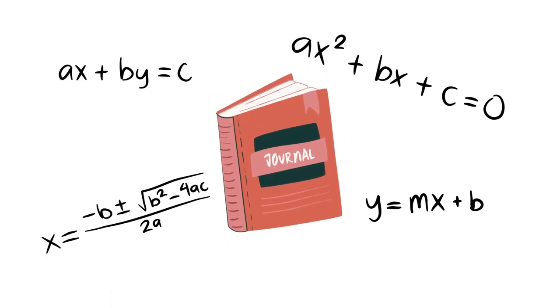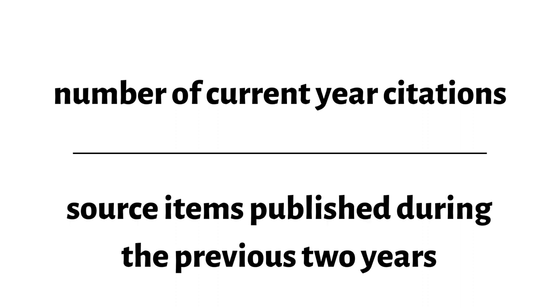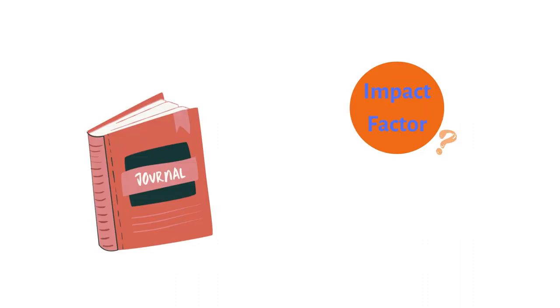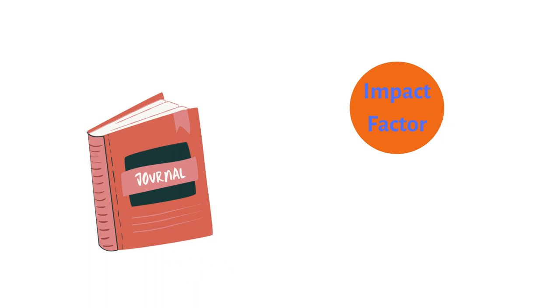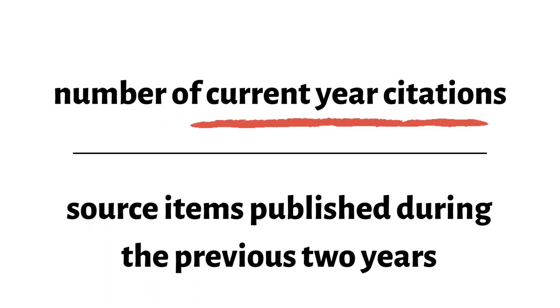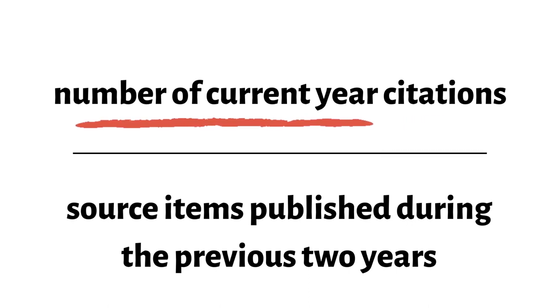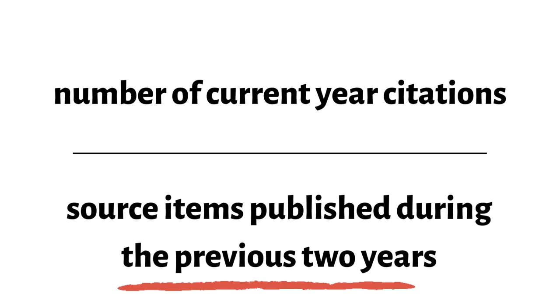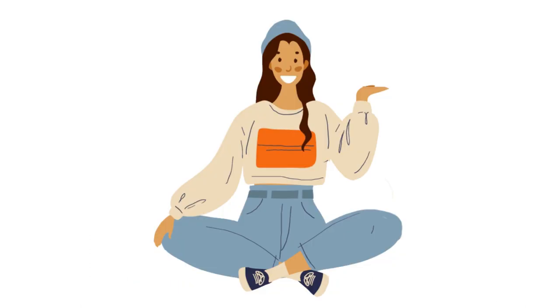So how is impact factor calculated? There's some math going on behind the scenes. A journal's impact factor is calculated by dividing the number of current year citations to the source items published in that journal during the previous two years. This is the reason that brand new journals don't have an impact factor. The numerator is composed of citations to the journal as a whole, regardless of the document type. The denominator includes three document types: reviews, articles, and proceedings papers.